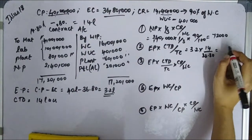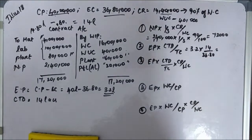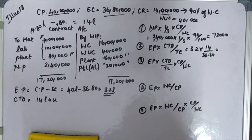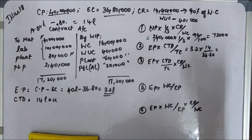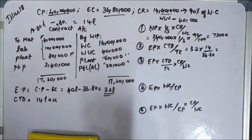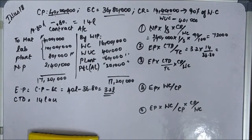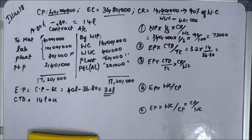Applying formula one: estimated profit 3,20,000 × cost to date 14,00,000 divided by total cost 36,80,000. Calculating this gives approximately 1,21,739.